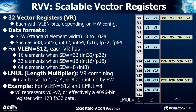For example, if a vector length is 512 and the length multiplier is 8, vector register V0 will actually represent 8 registers, effectively a 4,096-bit register with 128 FP32 data elements. This is flexible at runtime by software.